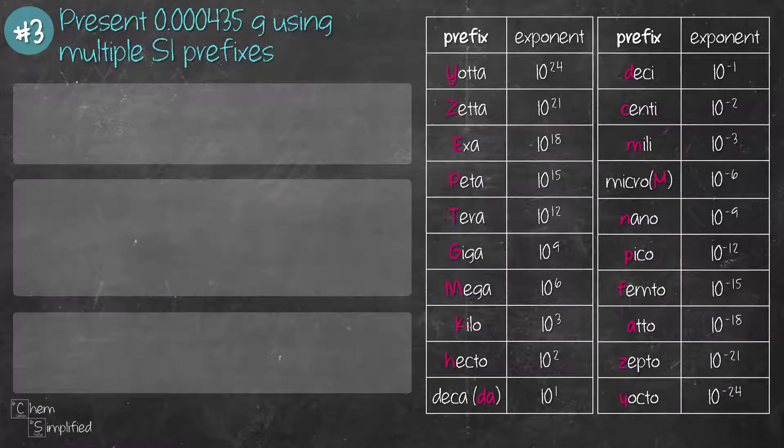The final question asks us to present 0.000435 grams using multiple SI prefixes. Since it's an open-ended question, meaning the specific SI prefixes are not requested, let's just practice converting this value into three different SI prefixes. So let's start with the first one.